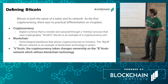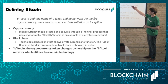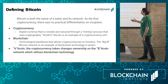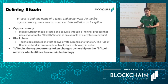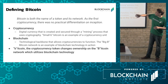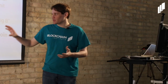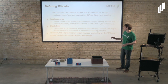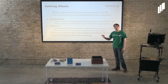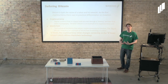Let's define Bitcoin. Bitcoin is both the name of a token and its network. As the first cryptocurrency and implementation of blockchain technology, there was no practical differentiation on inception, but that has since changed. Cryptocurrency is a digital currency that's created and secured through a mining process that uses cryptography. A blockchain is the technological backbone that allows cryptocurrencies to function. In summary: Bitcoin, the cryptocurrency token, changes ownership on the Bitcoin network, which utilizes blockchain technology.